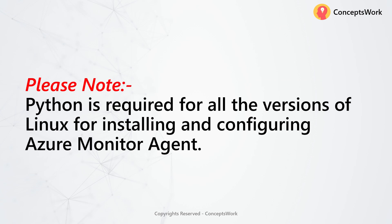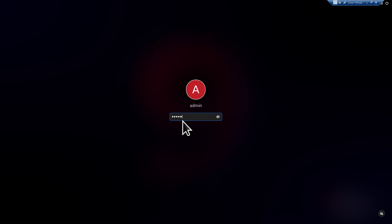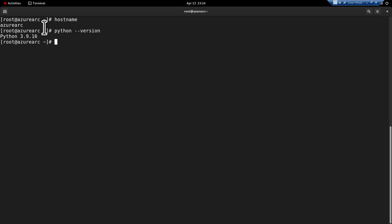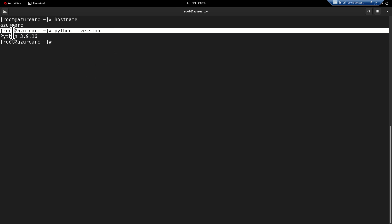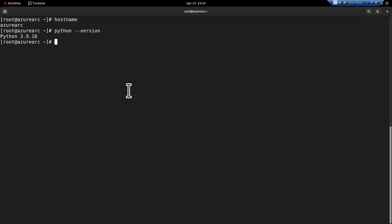Since we're talking about Linux as a platform, the very first prerequisite is to make sure that you have installed Python on the machine where you're going to install the AMA Agent. For this particular demo, the machine I'm using is RHEL 9.2, and as you can see, I have already installed Python — the version is 3.9.16.